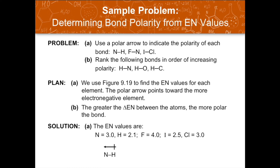Looking at the electronegativity values: nitrogen is 3, hydrogen is 2.1, fluorine is 4, iodine is 2.5, and chlorine is 3.0. Therefore, in the nitrogen–hydrogen bond, the polar arrow points toward nitrogen since it is more electronegative. In the fluorine–nitrogen bond, the polar arrow points to fluorine since it is more electronegative. In the iodine–chlorine bond, the polar arrow points to chlorine because it is more electronegative than iodine.